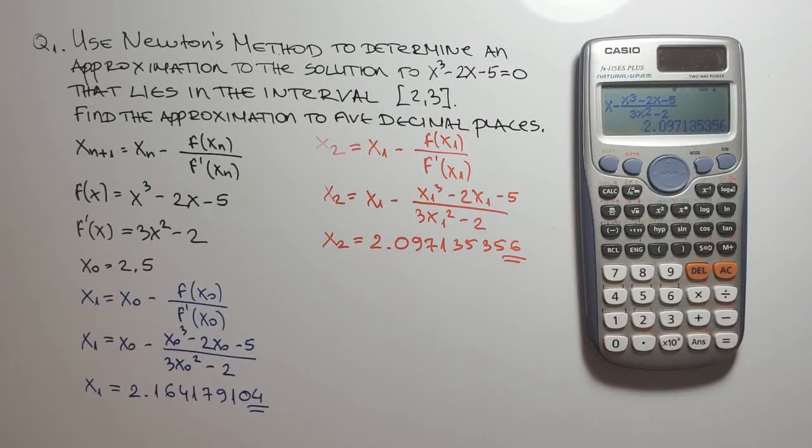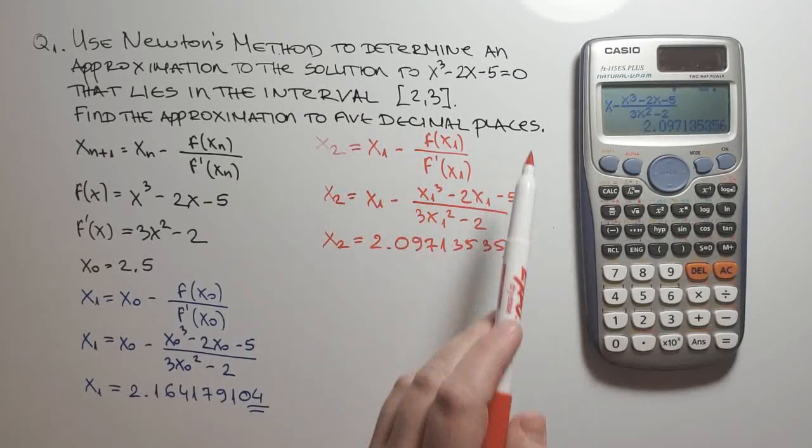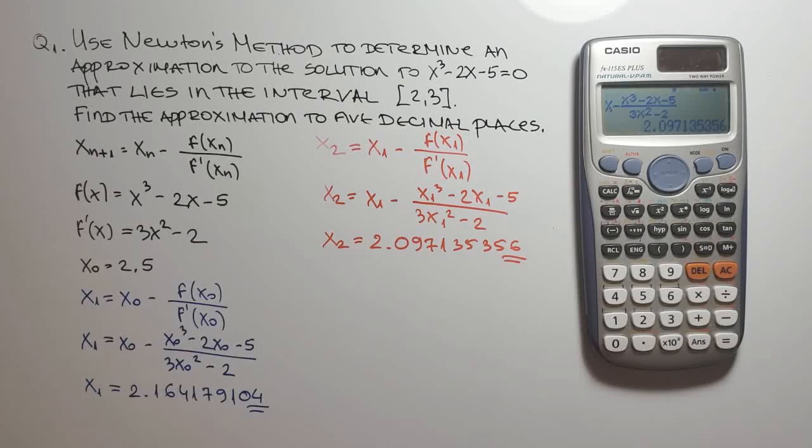Now comes the question, when do we stop? How many times do we go through the process? And the answer is, one of the common stopping points in the process is when two successive approximations agree to a given number of decimal places. From the question, we see we need five decimal places. And we look at our two approximations, x sub 1 and x sub 2. And we see that we are not even close to our solution. So we keep going.